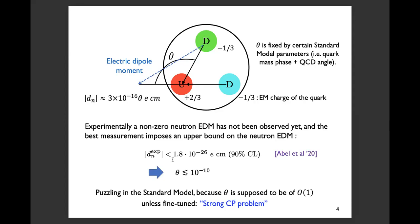The experimental measurements only impose an upper bound on the possible magnitude of the neutron EDM, placing a strong constraint. To be compatible with this experimental result, the theoretically predicted theta has to be smaller than 10^{-10}. This small theta is puzzling within the standard model, because theta is supposed to be order 1 unless it's fine-tuned. Theta is given by the sum of the quark mass phase and the QCD angle. The quark mass phase is expected to be order 1, since we have already observed order-1 quark mass phase in the electroweak interaction, requiring a very fine-tuned cancellation. This is the strong CP problem.